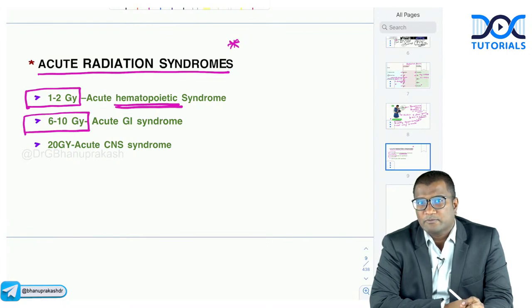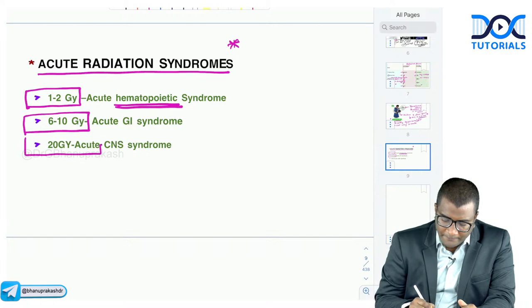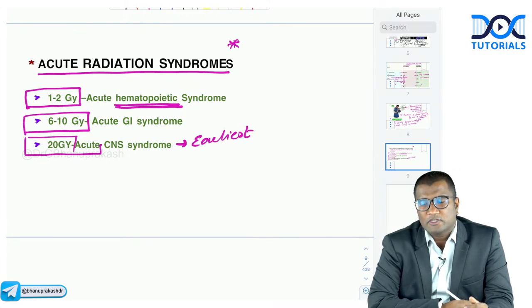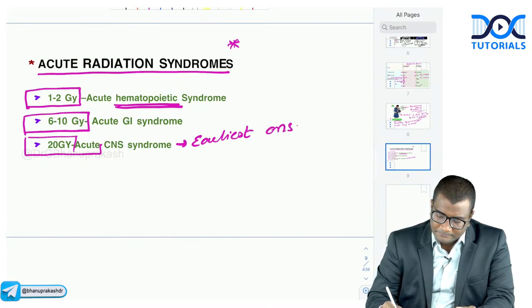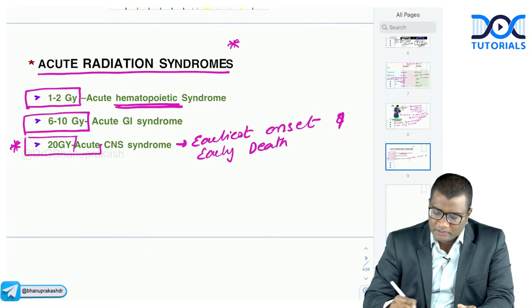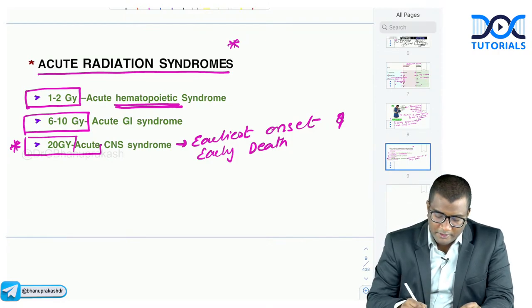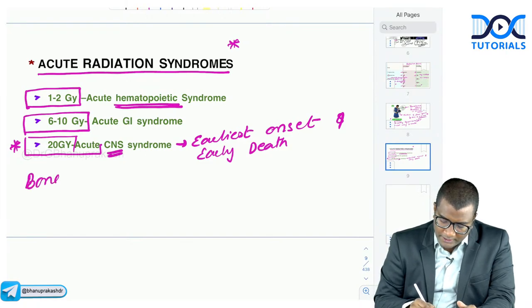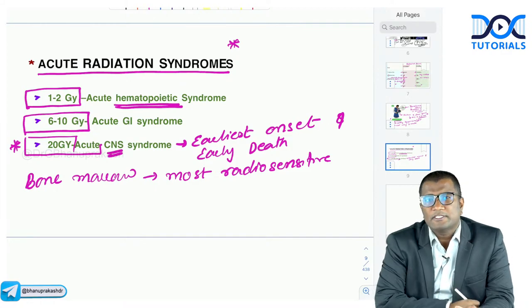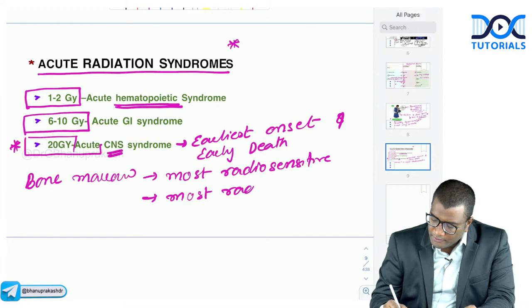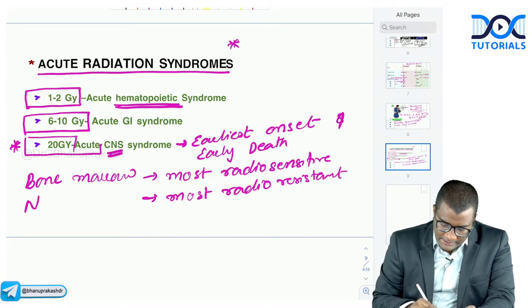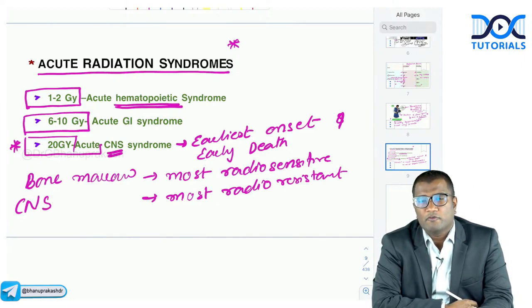Exposure to more than 6–10 gray causes GI syndrome: nausea, vomiting, electrolyte imbalance. Exposure to more than 20 gray causes CNS syndrome — convulsions, coma, and death — with the earliest onset within minutes and earliest death. Remember: bone marrow is the most radiosensitive tissue; CNS is the most radio-resistant tissue. That is why hematopoietic syndrome develops at lower doses and CNS syndrome requires very high doses above 20 gray.